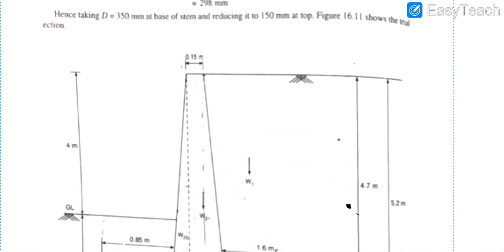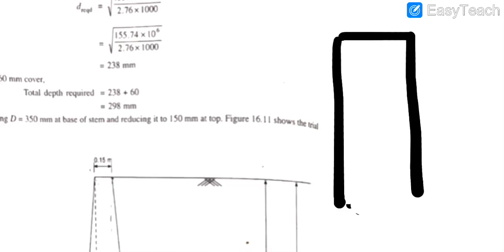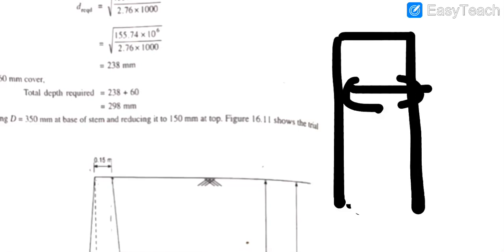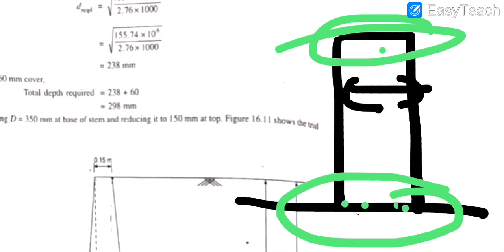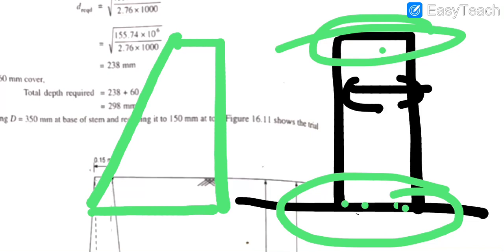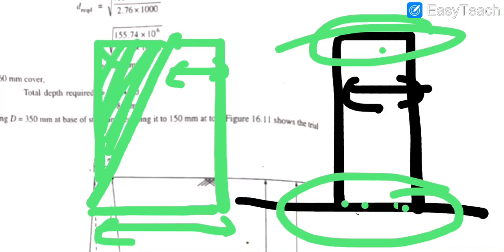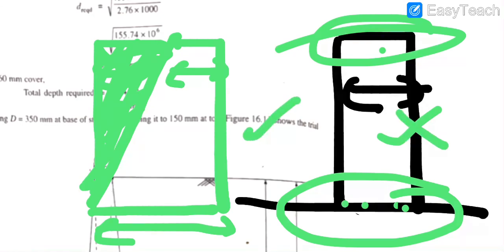So our cantilever retaining wall stem will be 350 mm thick. As we know, in a cantilever the bending moment is maximum at the support (base) and minimum (zero) at the free end. So, similar to a cantilever slab, we can taper the stem — 350 mm at the base reducing towards the top.